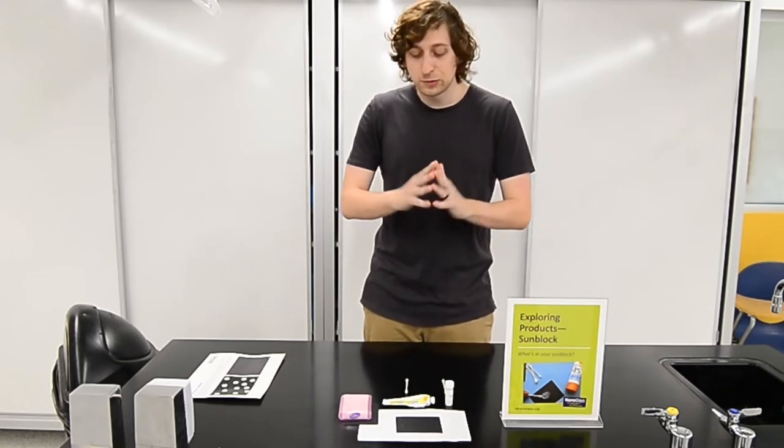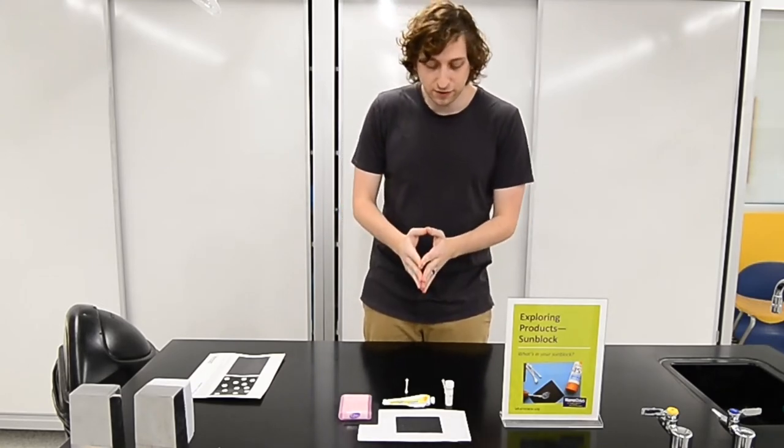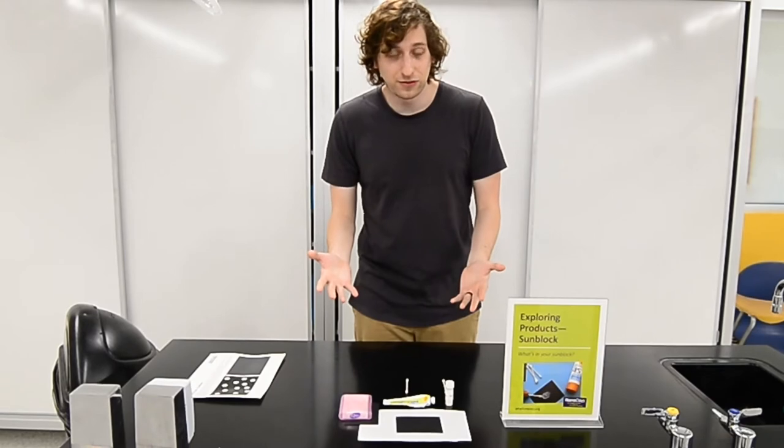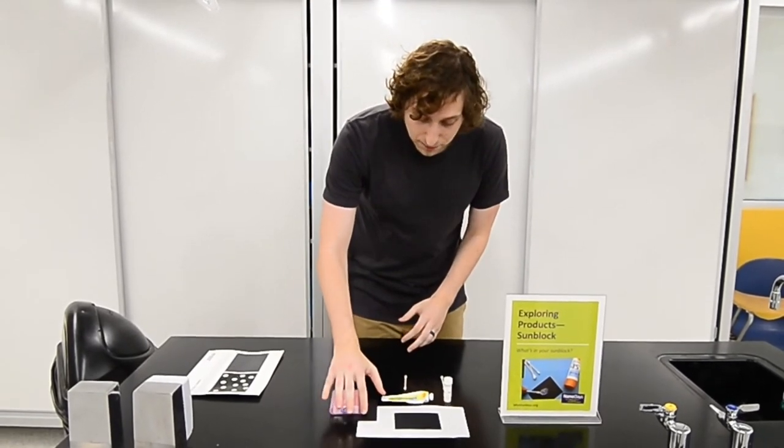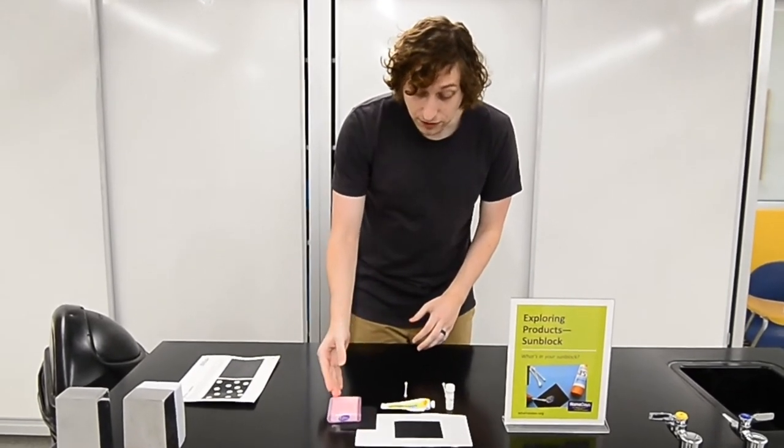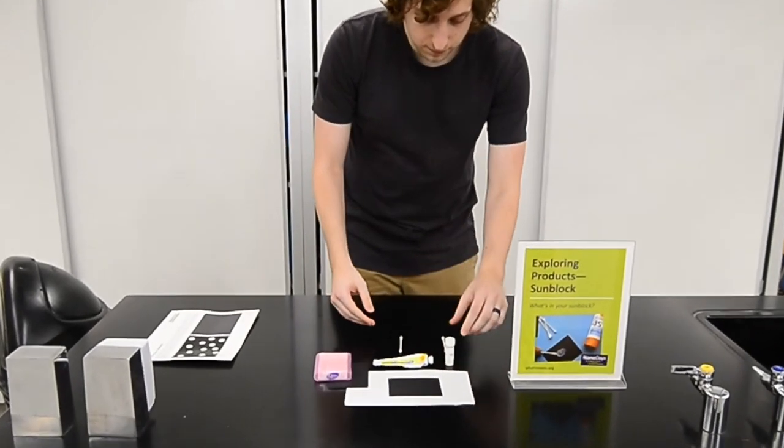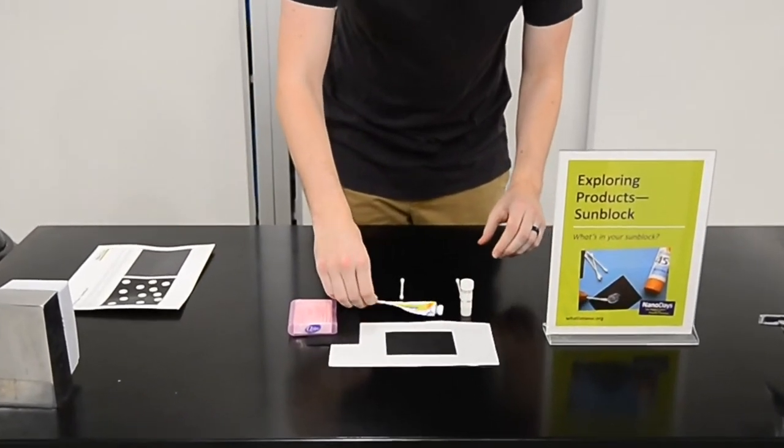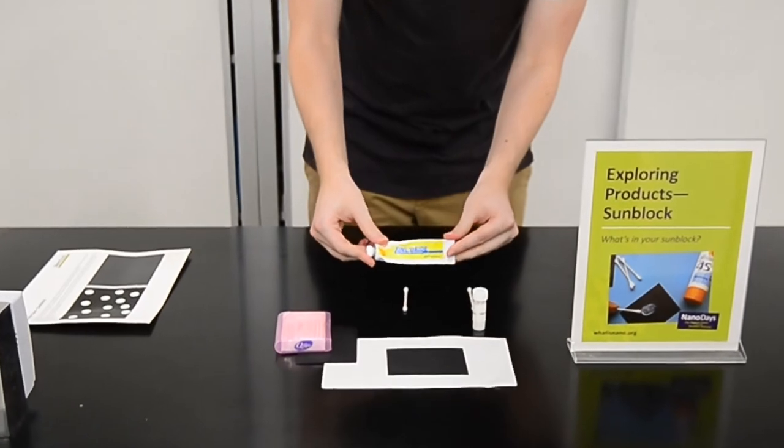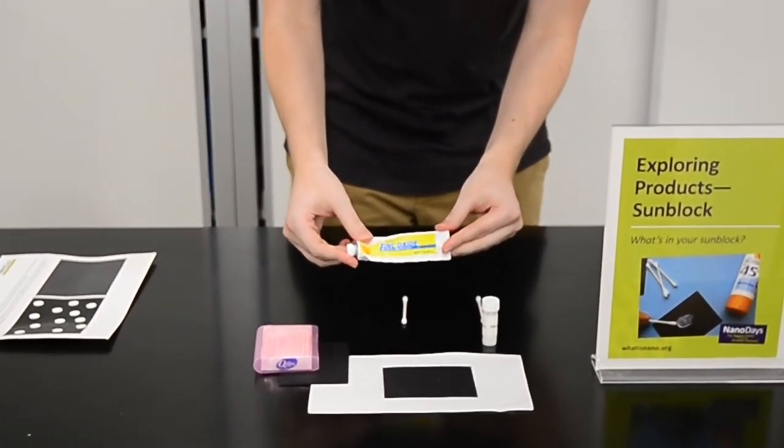So first, before we get into it, let's talk about the experiment itself. All you'll need to do this experiment is some dark construction paper, some q-tips, and then finally you want some regular sunblock. It might say zinc oxide, it might just say white film sunblock.